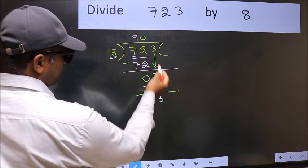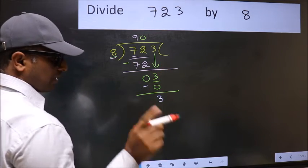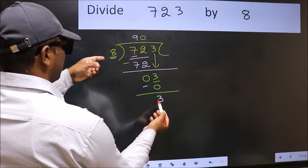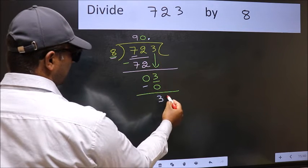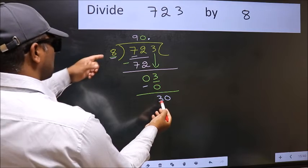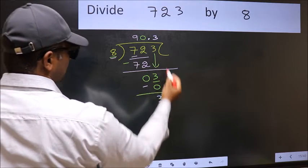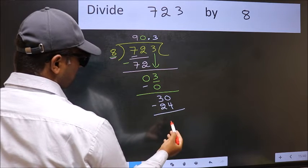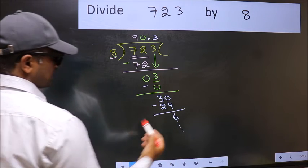Over here, we did not bring any number down and 3 is smaller than 8. So, now we can put dot and take 0. So, 30. A number close to 30: 8 threes is 24. Now you should subtract. You get 6. And continue the division.